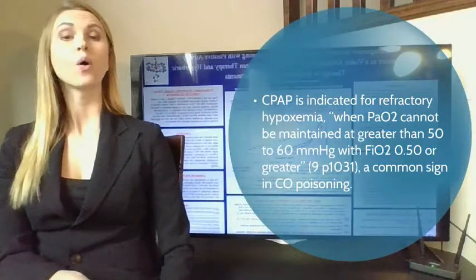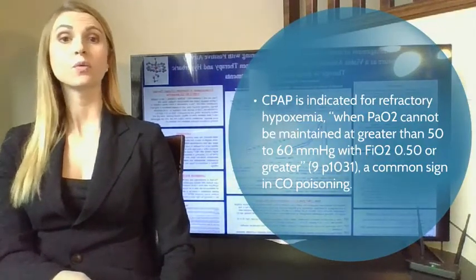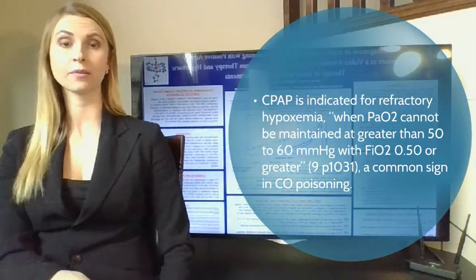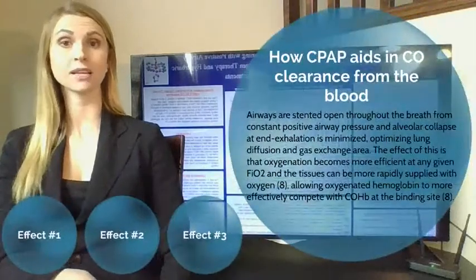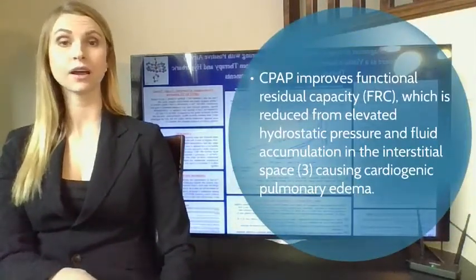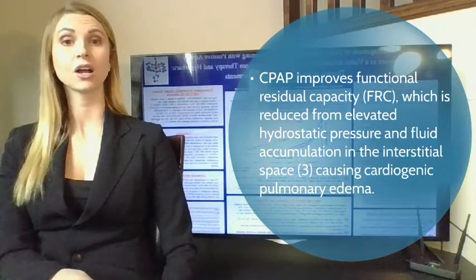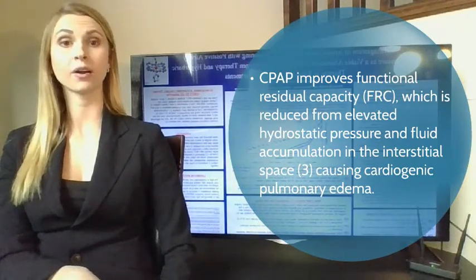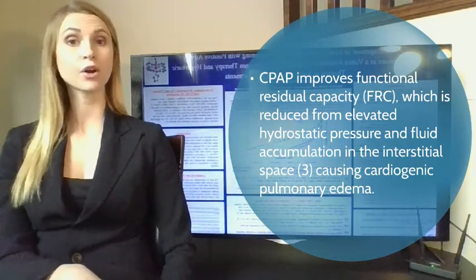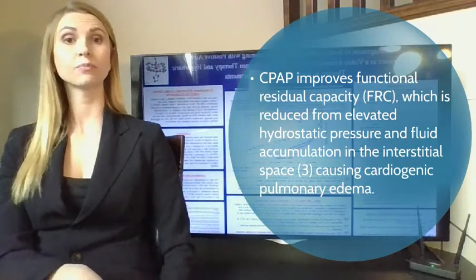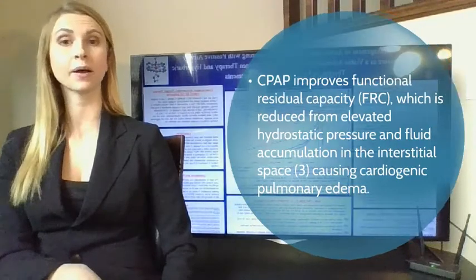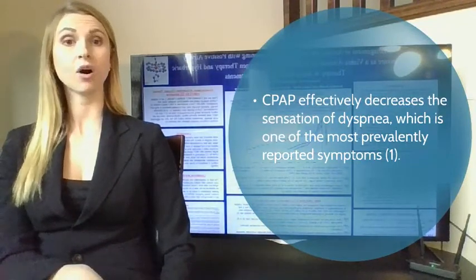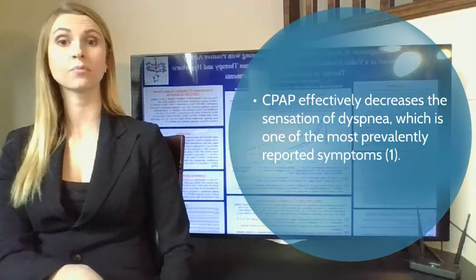One of the many indications for CPAP is refractory hypoxemia, which is when the PaO2 cannot be maintained at greater than 50 to 60 millimeters mercury with an FiO2 of 50% or greater — one of the most common symptoms in carbon monoxide poisoning. Secondly, during carbon monoxide exposure, direct insult to the pulmonary vasculature causes elevated hydrostatic pressure and fluid accumulation in the interstitial space, known as cardiogenic pulmonary edema, leading to a reduction in FRC. Current recommendations are a CPAP of 8 to 12 centimeters of water to improve FRC and treat cardiogenic pulmonary edema. Thirdly, CPAP has the added capability to effectively decrease the sensation of dyspnea, which is the most prevalently reported symptom.